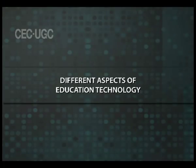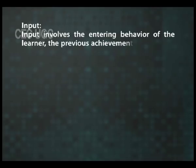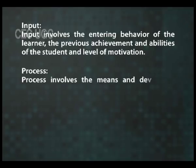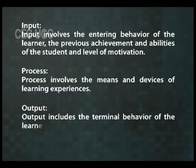Different aspects of education technology: education technology has three major aspects. Input involves the entering behavior of the learner, the previous achievement and abilities of the student, level of motivation, and the skill and awareness of teaching and training methods. Process involves the means and devices of learning experiences, and the selection and use of appropriate teaching strategies and tactics for desired learning structure. Output includes the terminal behavior of the learner.